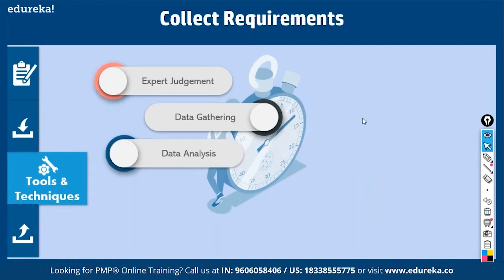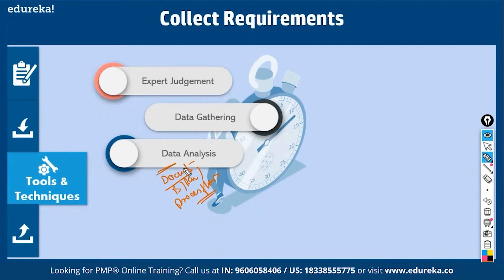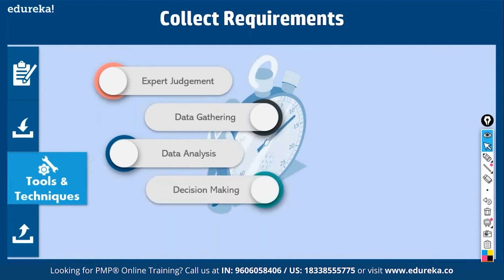Data analysis involves analyzing documents like agreements with the customer, business plans, process flow charts, issue logs, policies, regulatory requirements, and RFPs. You have to analyze a lot of data to decide what requirements to collect. Decision-making is also involved — once you collect requirements from stakeholders, you present them and stakeholders must prioritize: which requirement is important, which is secondary. Decisions can be by unanimity (100% agree), majority (more than 50%), or plurality (largest winning block out of multiple groups).